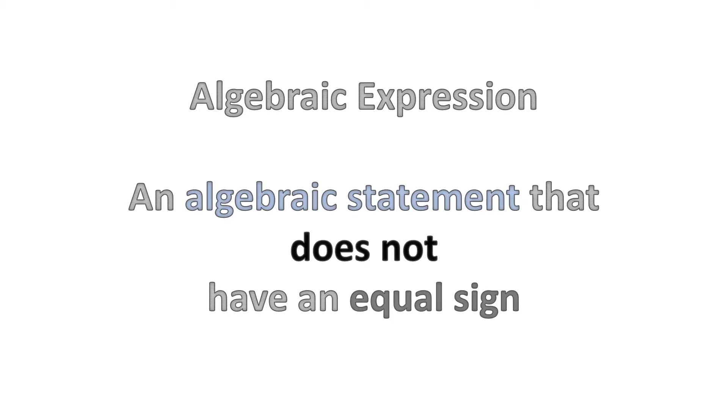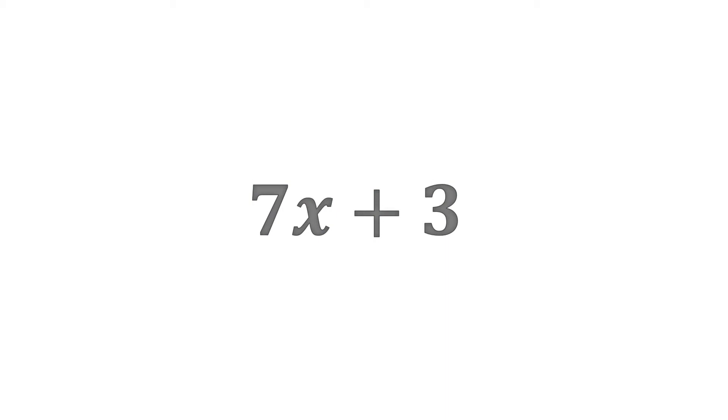So let's first start with the basic definition of an algebraic expression. It states that an algebraic expression is an algebraic statement that does not have an equal sign. So it's like saying 7x plus 3, or 7x add 3. There is no equal sign, there is nothing that it equals to. It's just a statement.